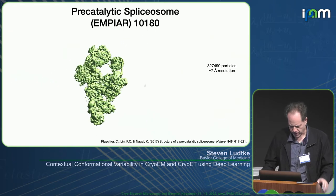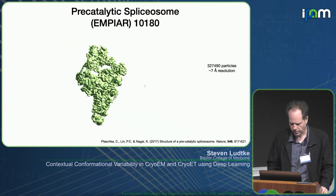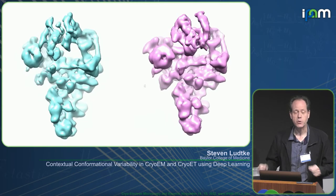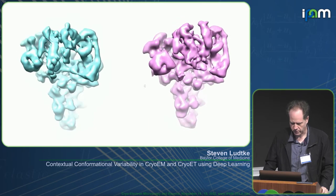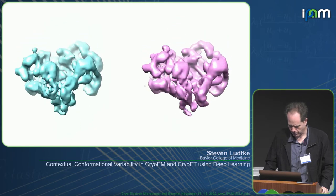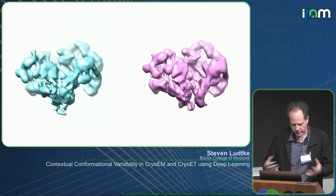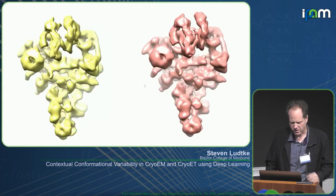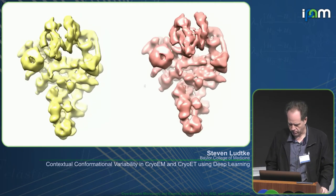The second example is the precatalytic spliceosome, which is a more continuous variability case. When we apply the method to this, we can find several different motions it's undergoing — two of them are represented here. This demonstrates that the method can immediately produce results for both continuous and discrete variability.